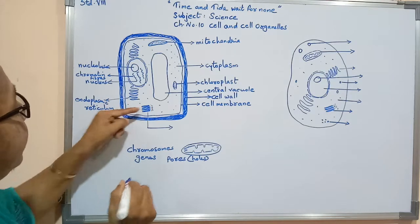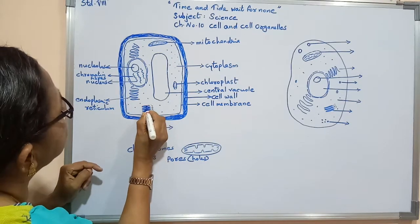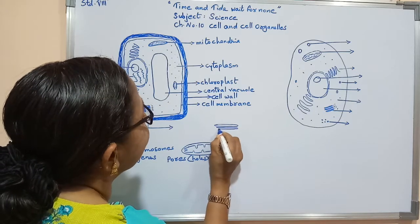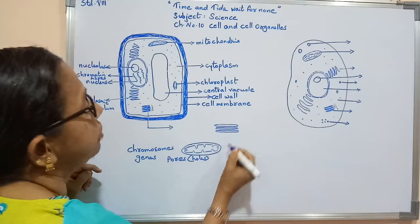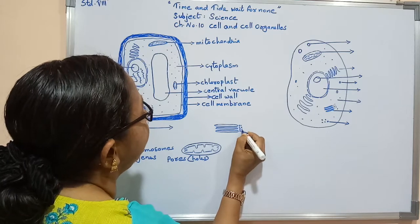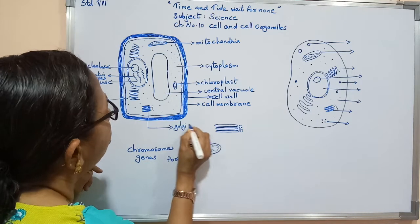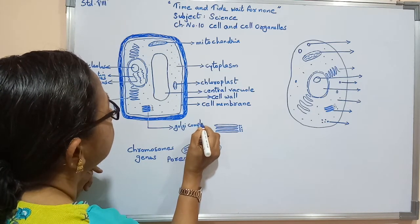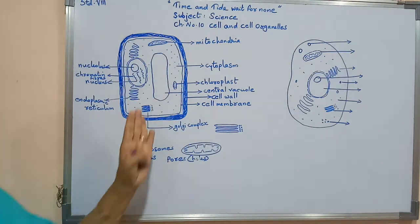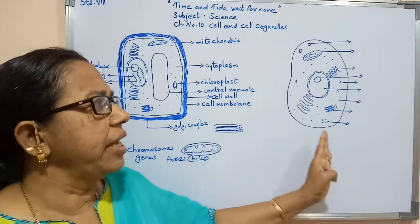Different ribbon-shaped structures can be seen, each one drawn and shown here. These structures are parallel to each other, and close to them small sacs can be found. This is known as the Golgi complex. These are the different parts or cell organelles of a plant cell. Now we will move on to the animal cell.